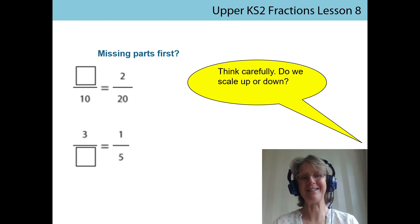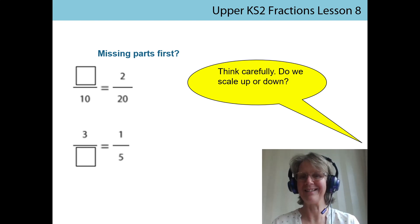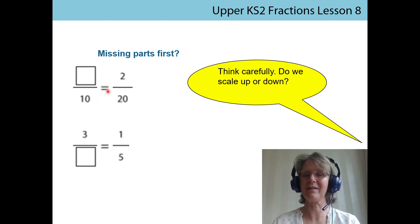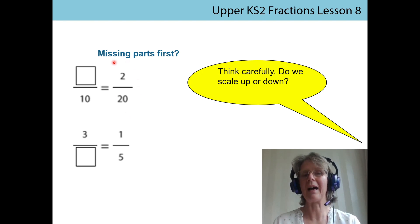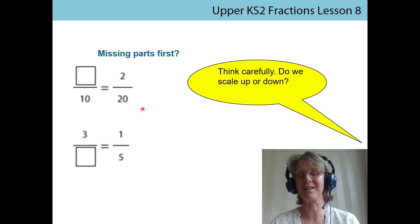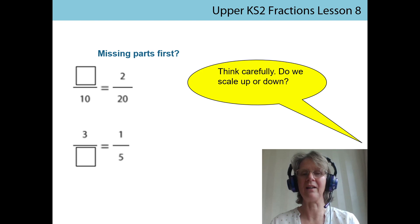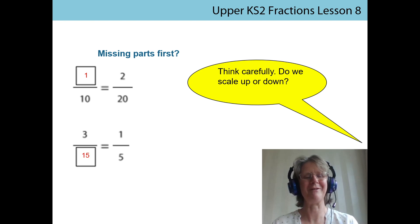You knew what was coming on this slide — in the last ones we had missing numerators and missing denominators, so on this one we get both. I wonder if you expected them to still be equivalent fractions, and I wonder if you thought about where we place the fraction that has both the numerator and denominator. It doesn't matter which side of the equals sign it is, because we know these are equivalent fractions. Think carefully: are you scaling up or down to find the missing numerator, denominator? Well done — you've really learned well.